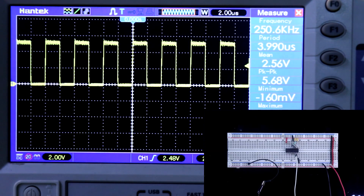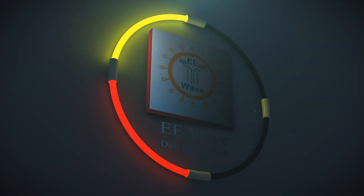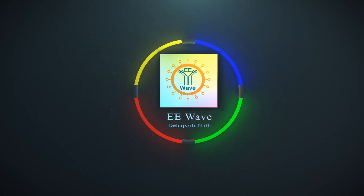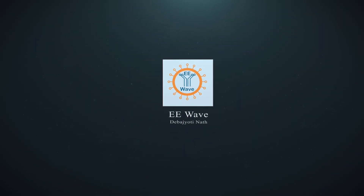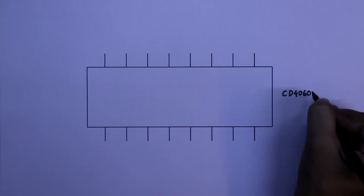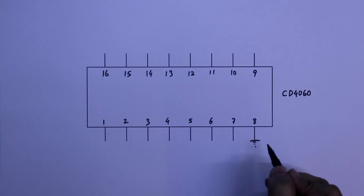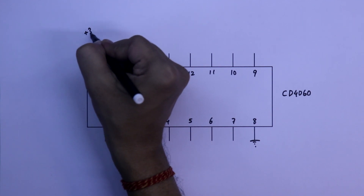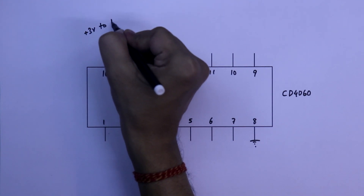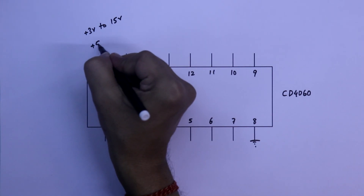Hello guys, in this video we are going to see how to use the CD4060. So let's get started. The CD4060 has 16 pins. Pin number 8 is ground and pin number 16 is VCC. We can supply from 3V to 15V, and we are going to use plus 5V.